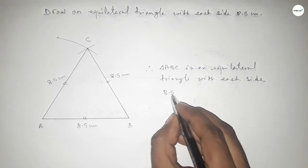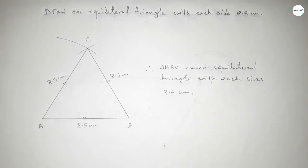So this is the process to construct an equilateral triangle with each side 8.5 centimeters. That's all, thanks for watching. If this video is helpful, then please share it with your friend.